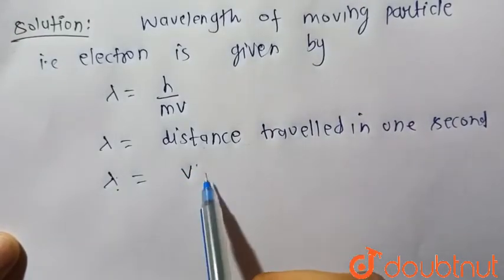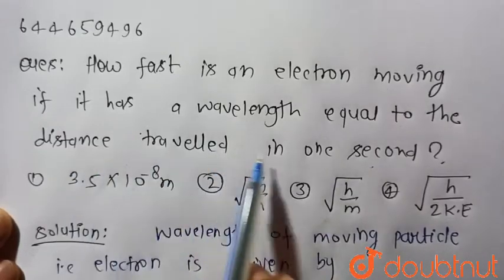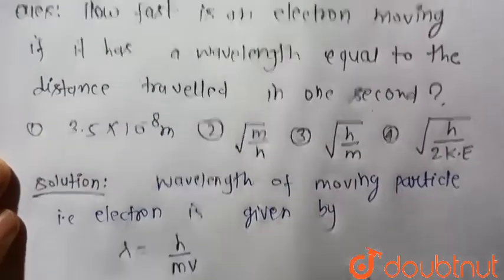Here lambda is equal to velocity because it is given that it has a wavelength equal to the distance travelled in one second, and we know the distance travelled in one second is the velocity.